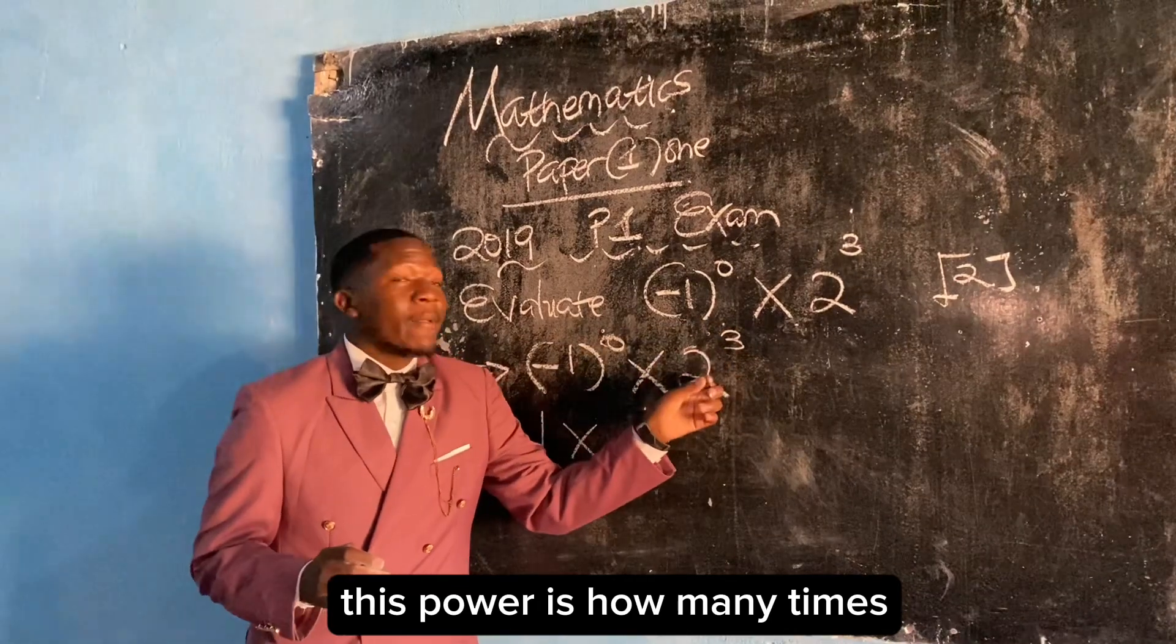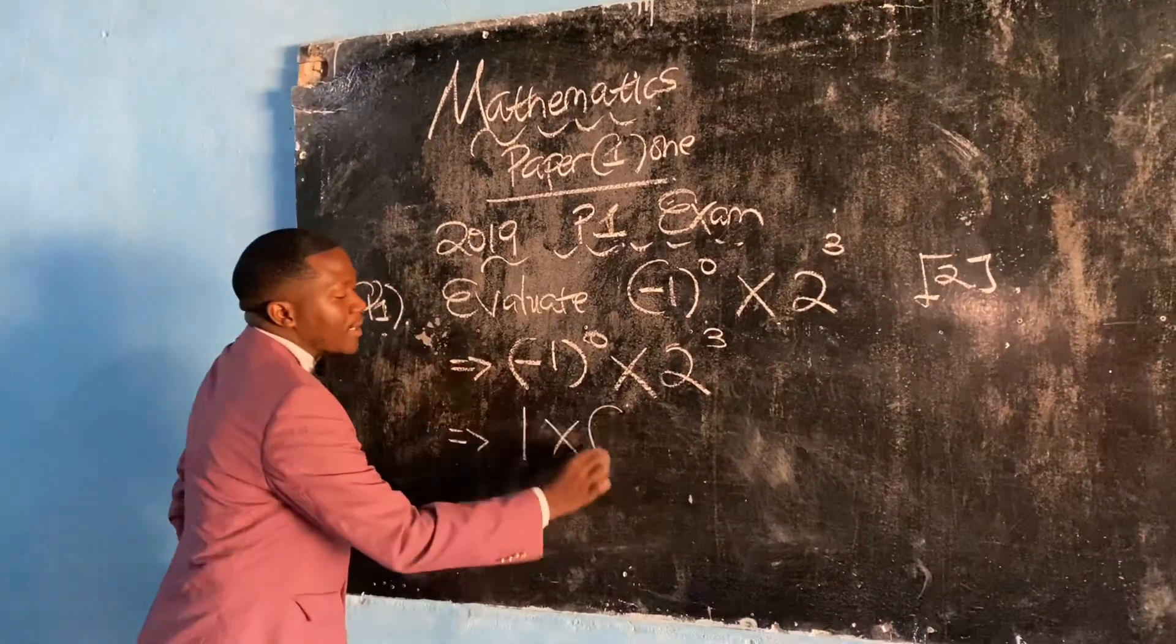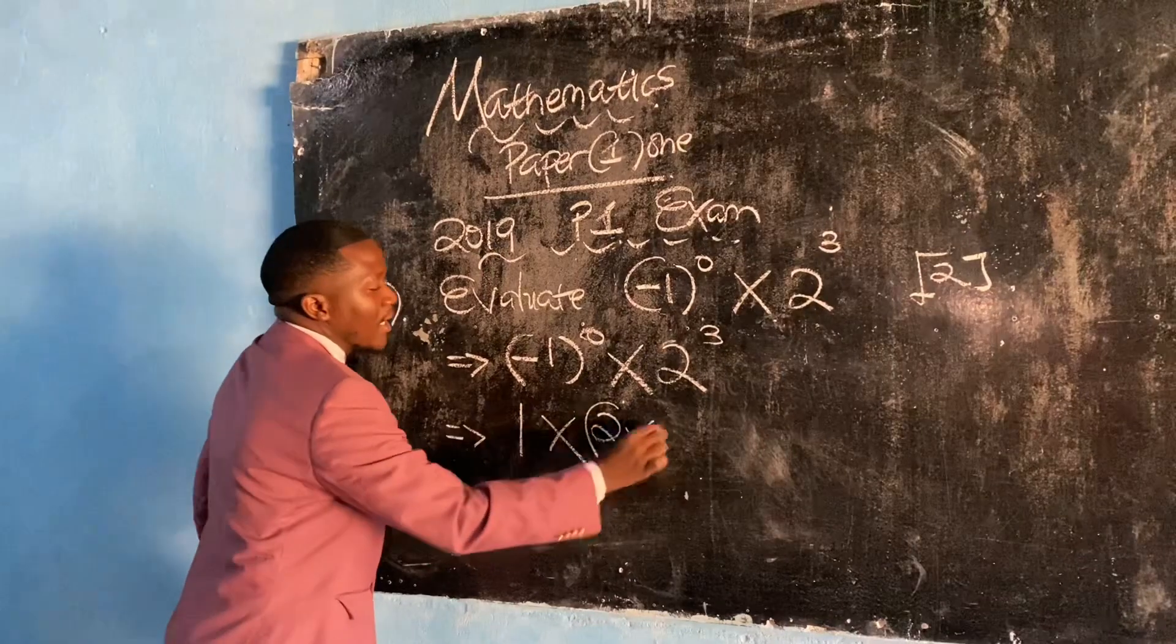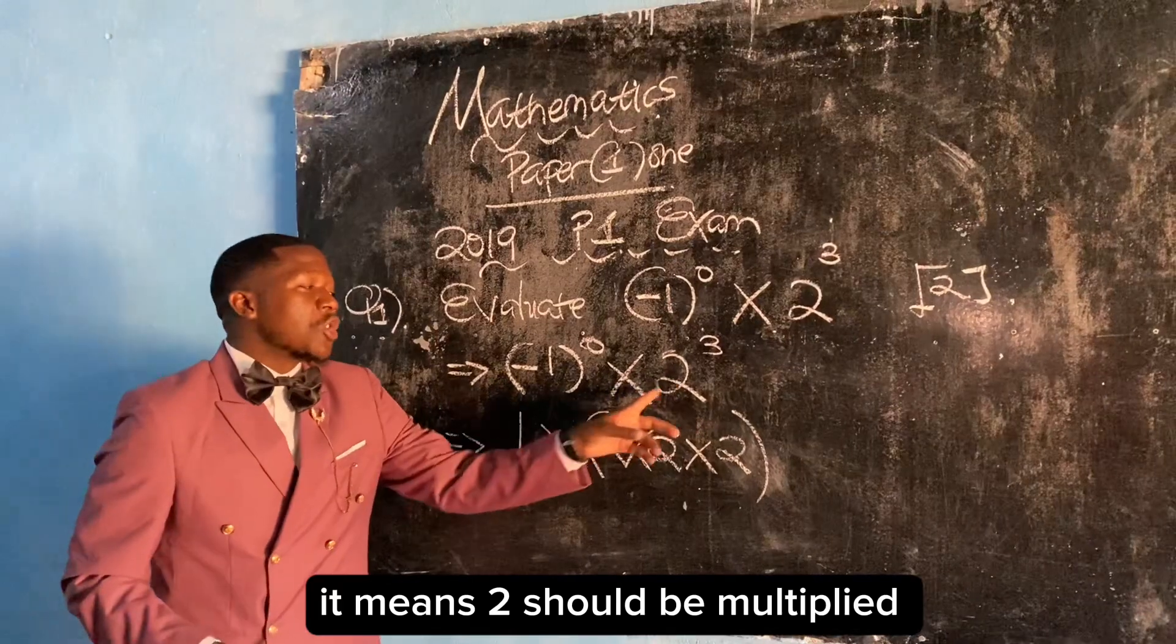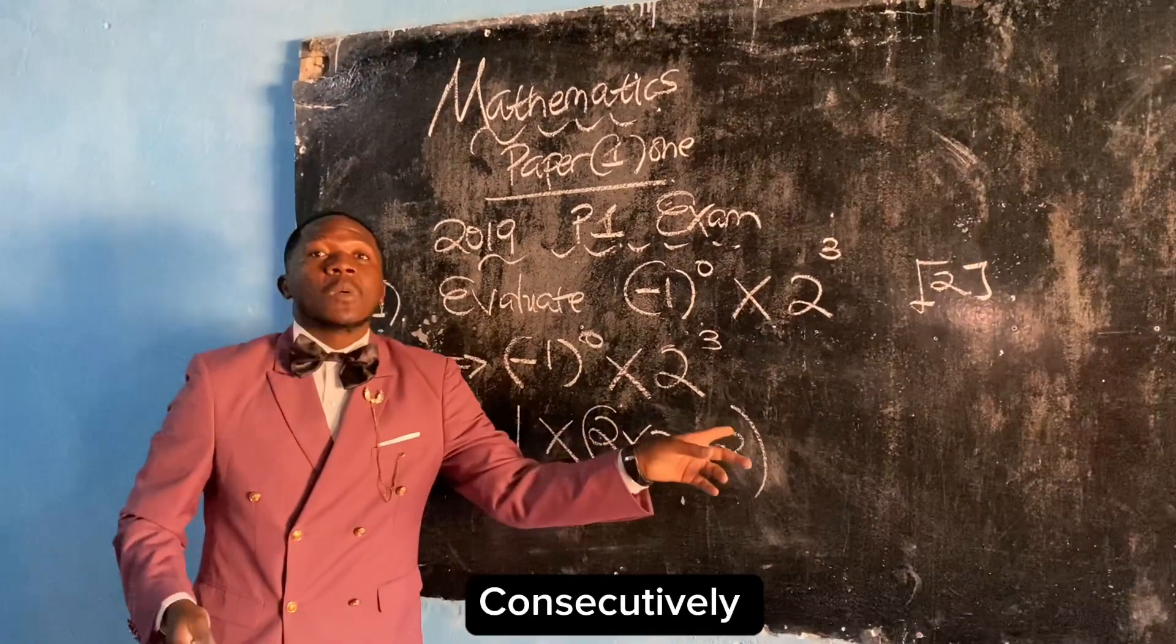...this power is how many times this number exists. This is the same as saying 2 × 2 × 2. It means 2 should be multiplied 3 times.